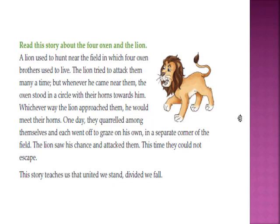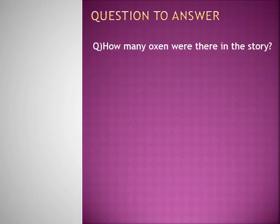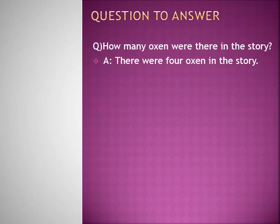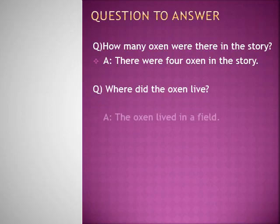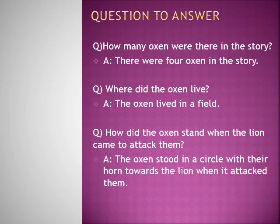Now let us answer the questions. First question: How many oxen were there in the story? There were four oxen in the story. Second question: Where did the oxen live? The oxen lived in a field. Third question: How did the oxen stand when the lion came to attack them? The oxen stood in a circle with their horns towards the lion when it attacked them.